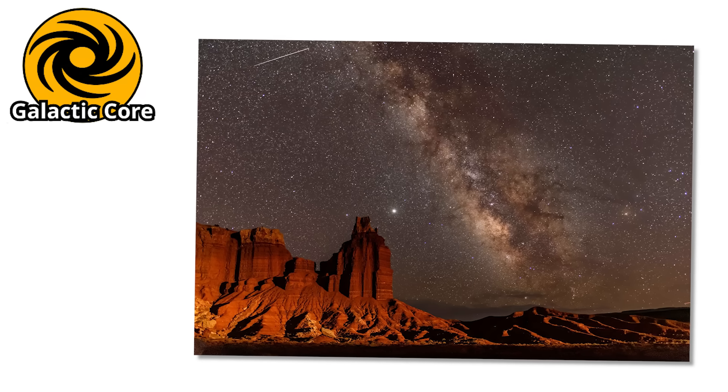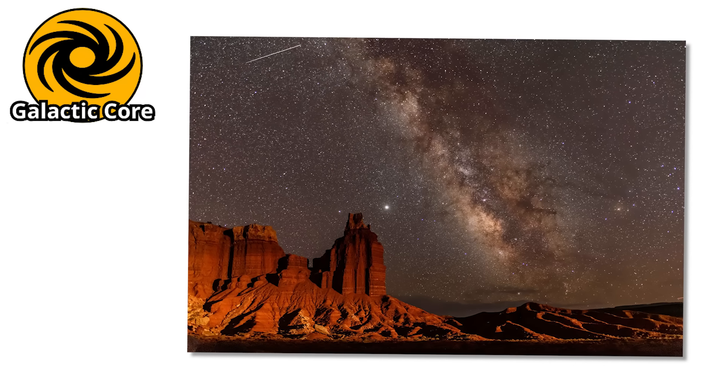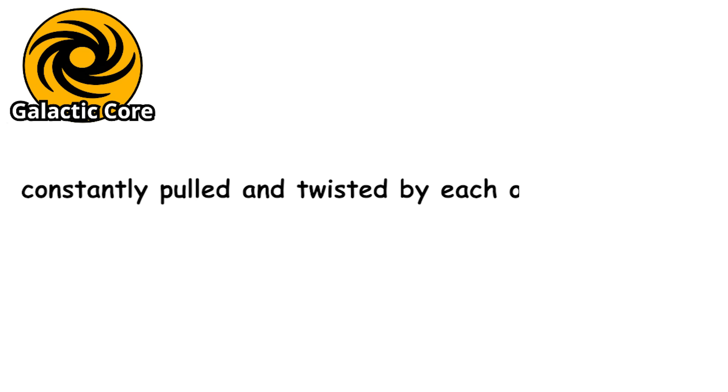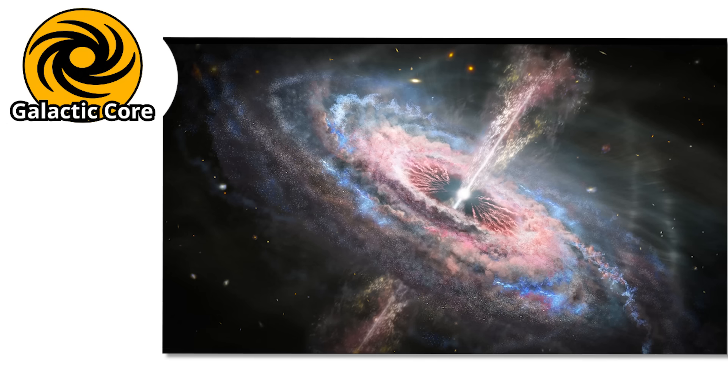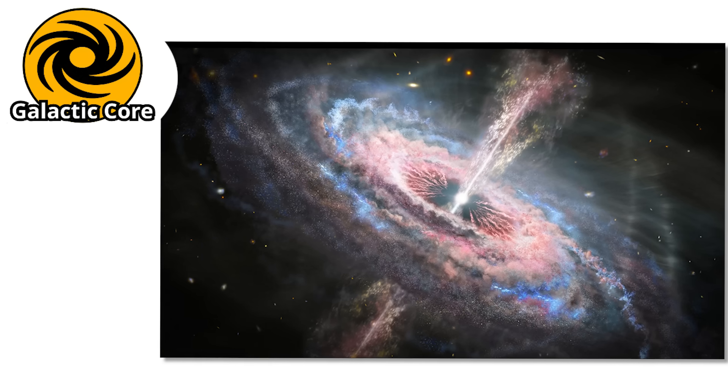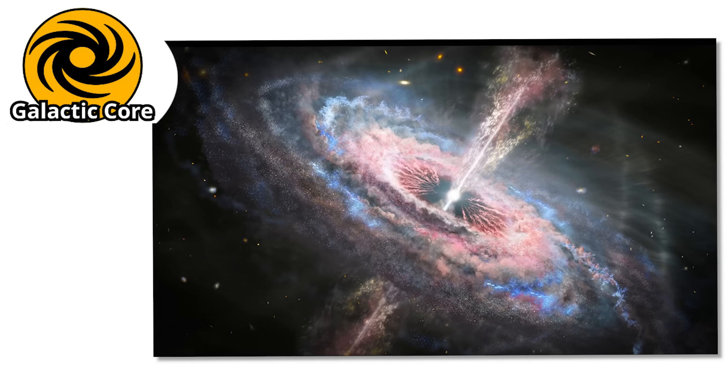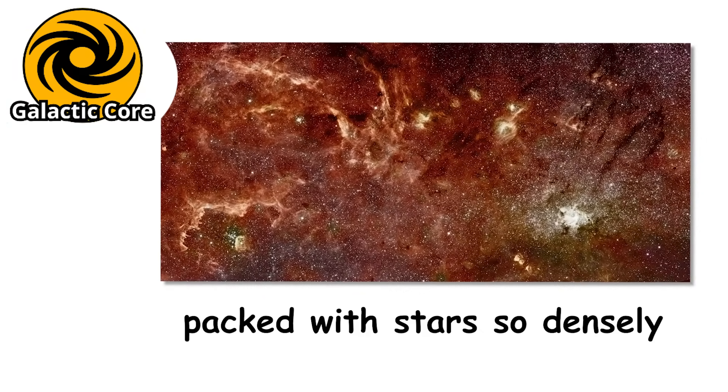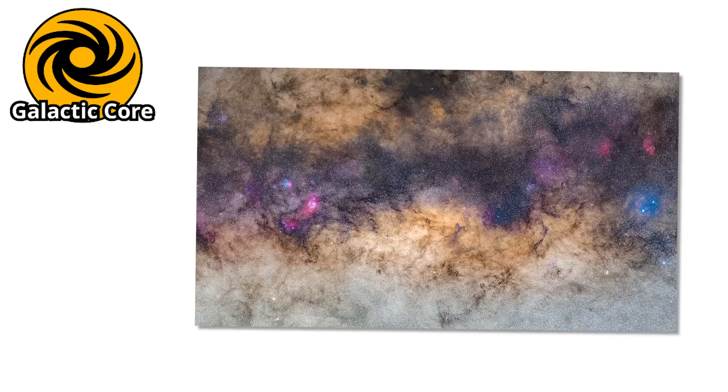Stars near the core do not drift gently. They slingshot through space at thousands of kilometers per second, constantly pulled and twisted by each other's gravity and the immense force of the black hole itself. If you could somehow stand near the galactic center, you would see a sky unlike anything on Earth. It would be packed with stars so densely that it might never get truly dark.